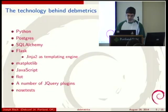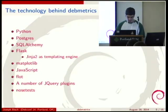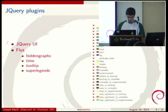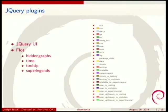These are the technologies that metrics uses. jQuery UI is used by the dynamic interface for some UI elements. A number of jQuery plugins are used by Flot. Flot is used to generate the dynamic graphs. The hidden graphs plugin is used to show or hide series on the graph. The time plugin allows time to be plotted on the x-axis.